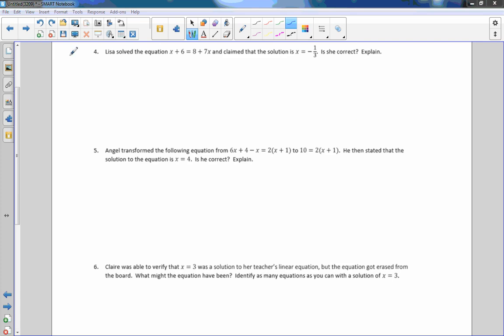Number 4. Lisa solved this equation. x plus 6 equals 8 plus 7x and claim that the solution is x equals negative 1 third. Is she correct? Explain. It's the same setup. Try it. Pause the video. Come back. I'm just going to rewrite this and replace x's with negative 1 third. There's an x. Negative 1 third plus 6 equals 8 plus 7 times negative 1 third.